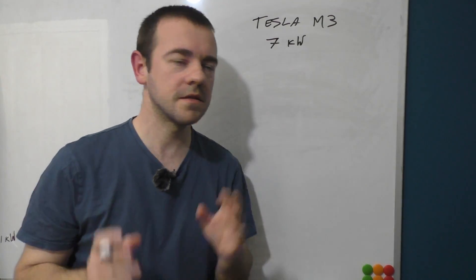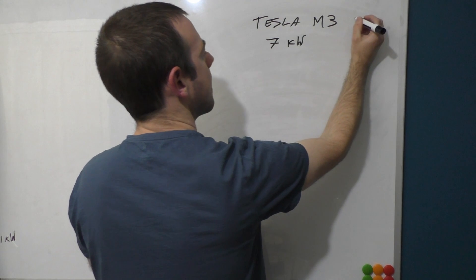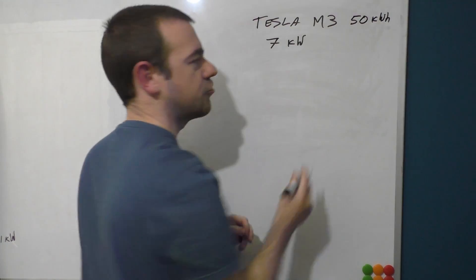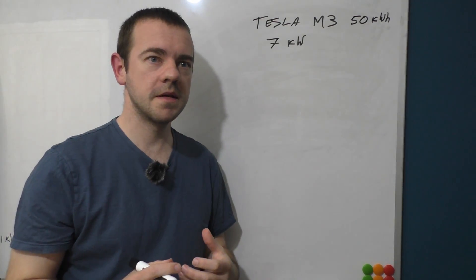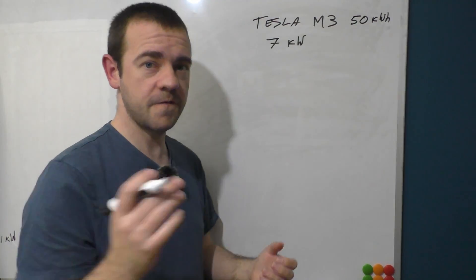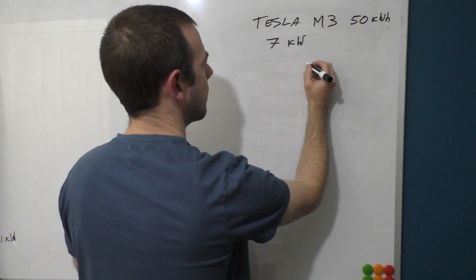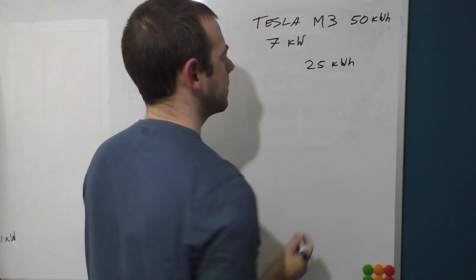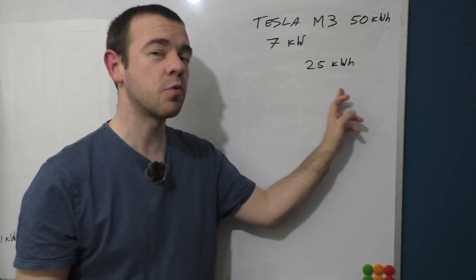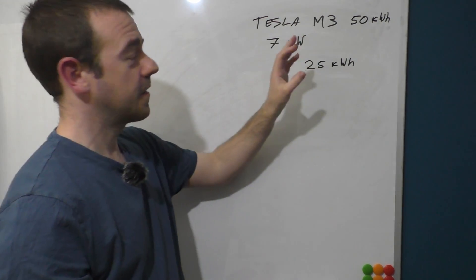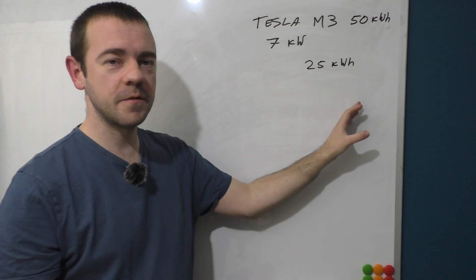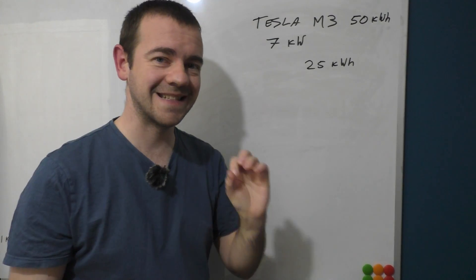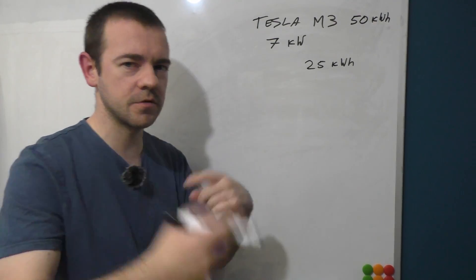So I plug a seven kilowatt charger into my Tesla which has a 50 kilowatt-hour battery. Okay, let's imagine my Tesla is half full, 50% charge. That means that I have roughly speaking anyway, because it doesn't always work out like this in EV terms, but let's imagine I've got 25 kilowatt-hour battery, which is 50%, and I plug it into my home charger which usually runs at a maximum of seven kilowatts.